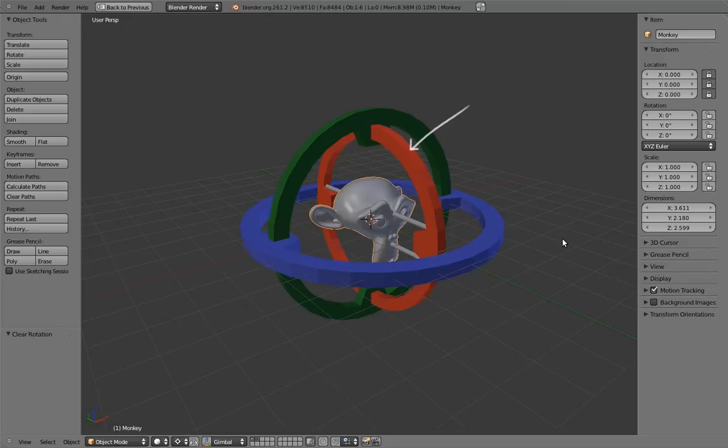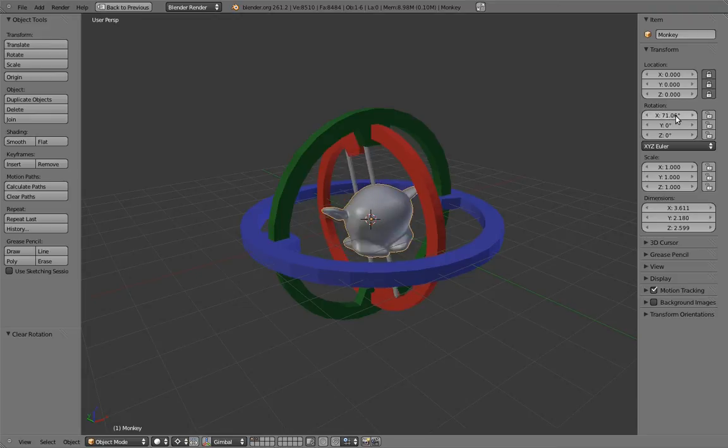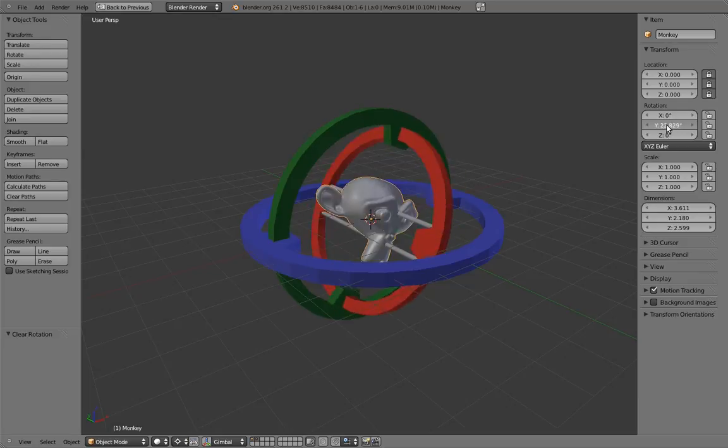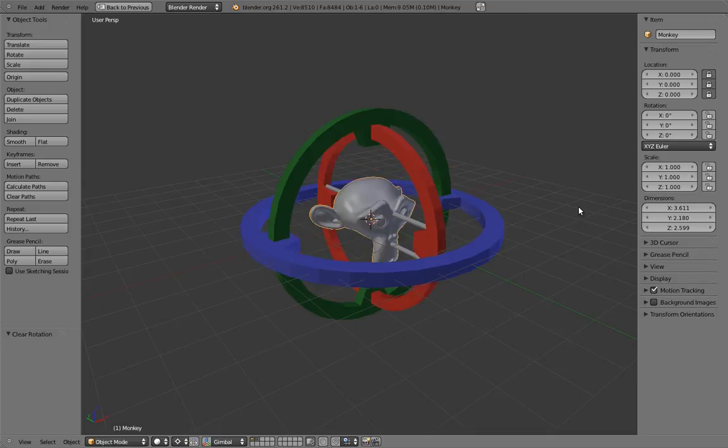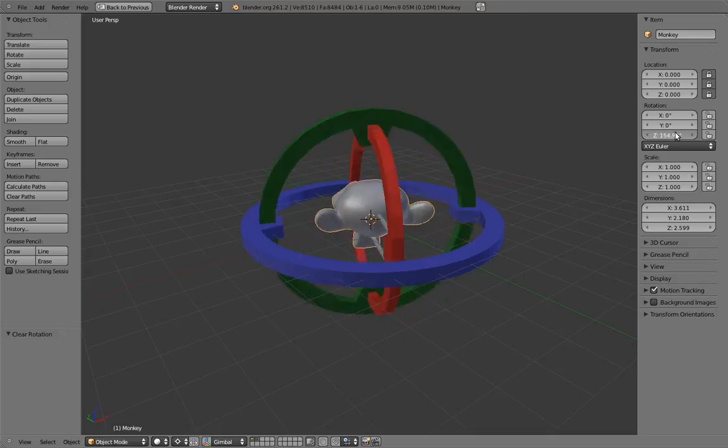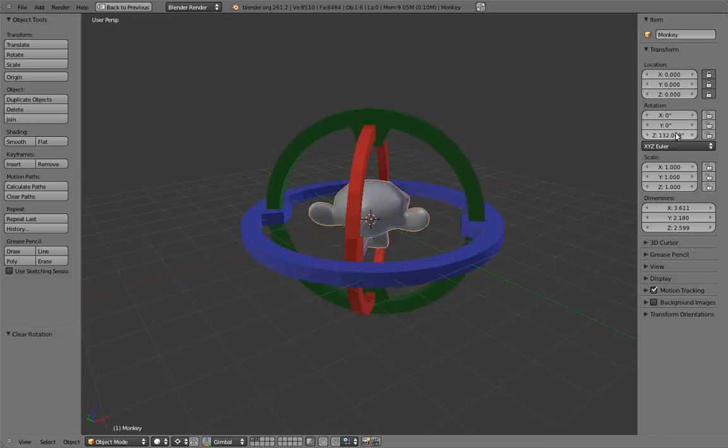Each ring represents one of our Euler rotation axes. The innermost one is the x-axis, the mid-sized one is the y-axis, and the outermost one is the z-axis. Now, let's play with these axes individually. Playing with the x-axis, we can see the innermost ring rotate. Playing with the y-axis, we can see the mid-ring rotate, but notice that it's taking the innermost ring with it. Finally, playing with the z-axis, we see the outermost ring rotate, and it takes both of the inner rings with it.